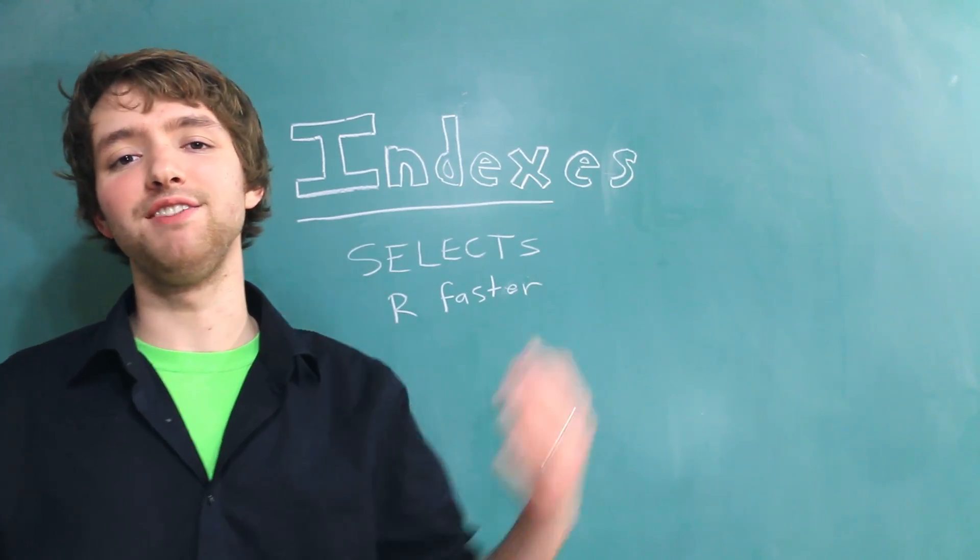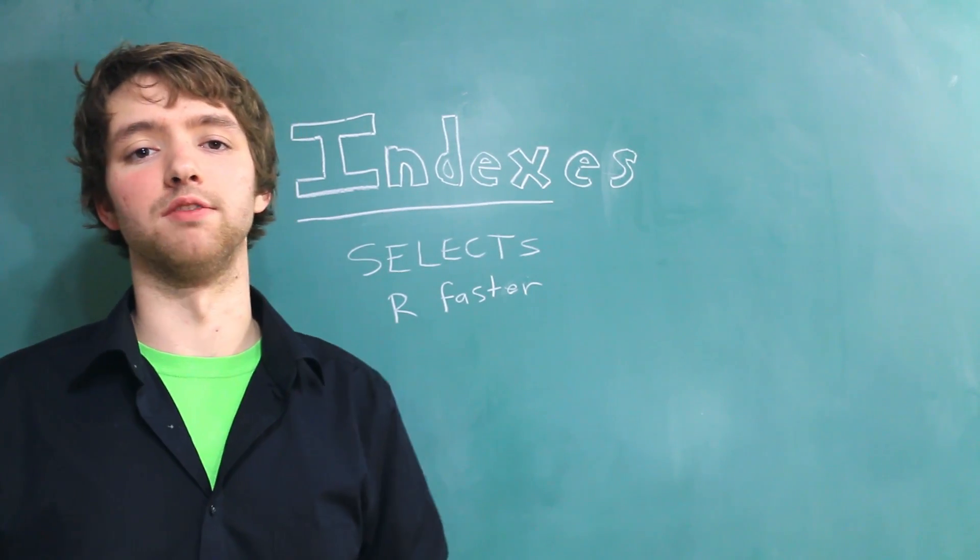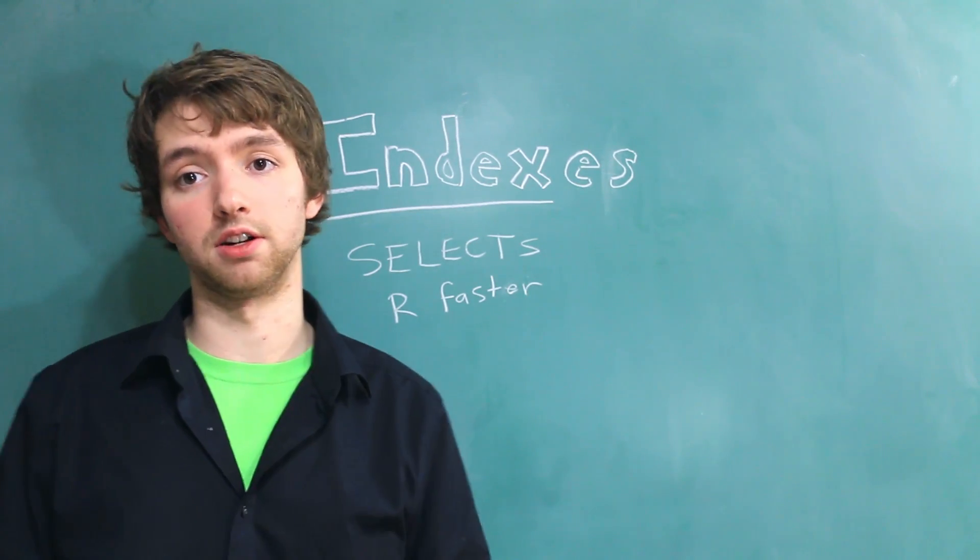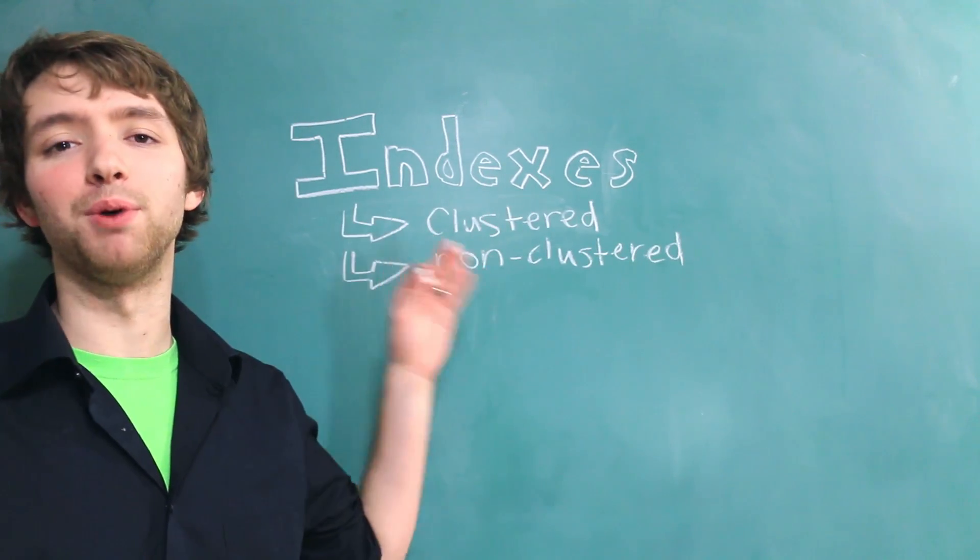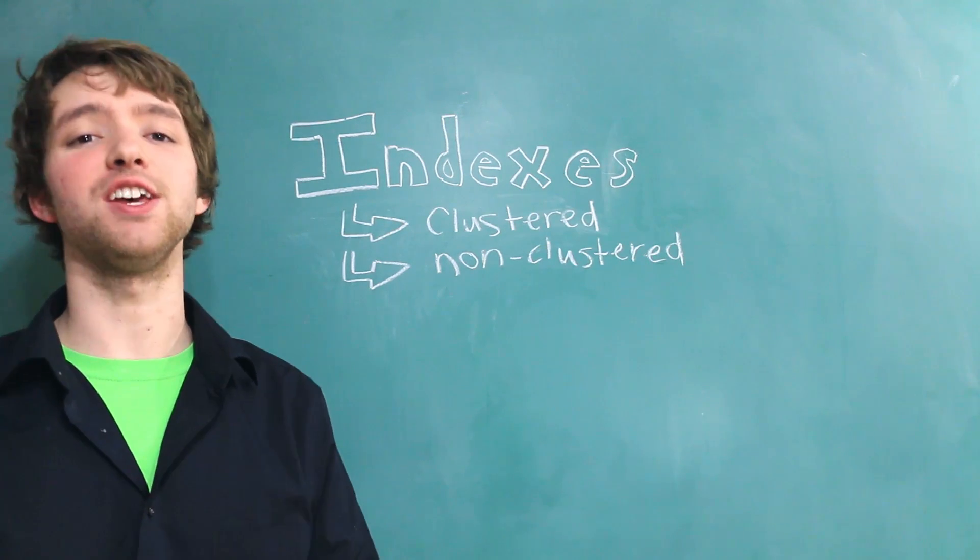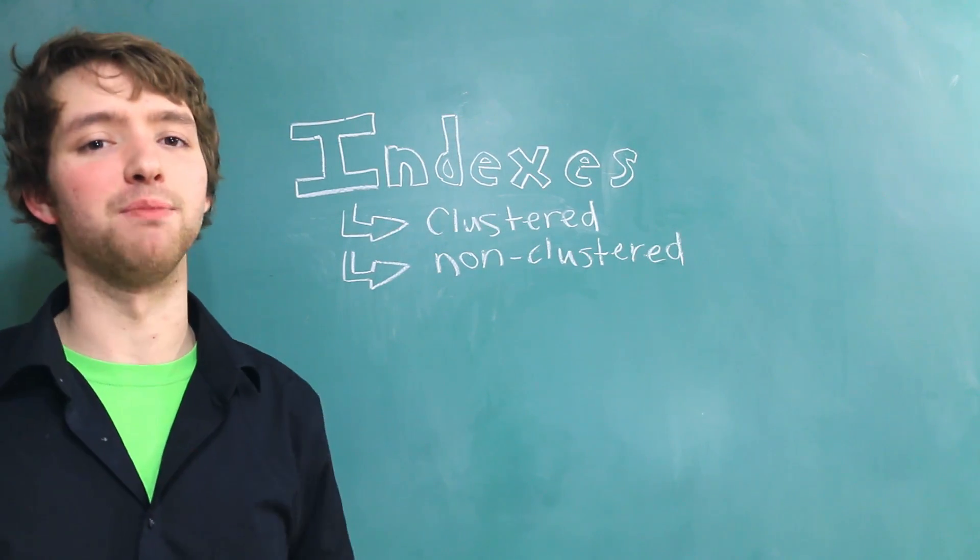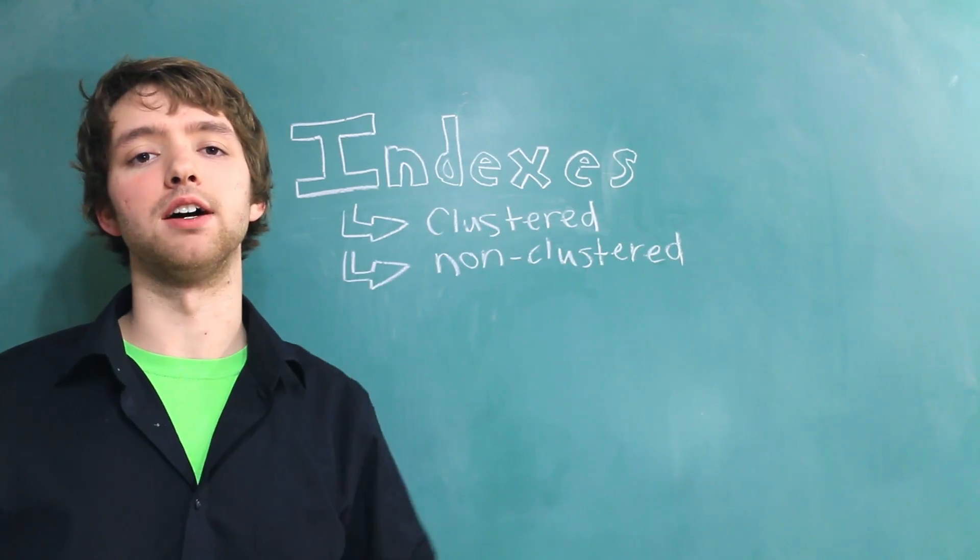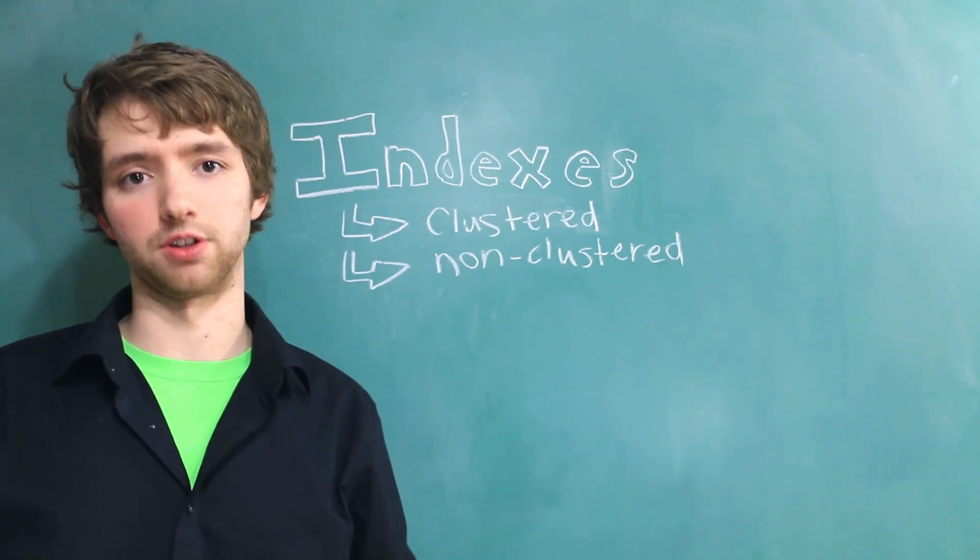Now there are two types of indexes when we are working with SQL Server and those two index types are clustered and non-clustered. I'm going to give you a rough overview of what both of these are so you are prepared to make legit indexes on your database. The essential difference between these two is how the data in the index is structured.